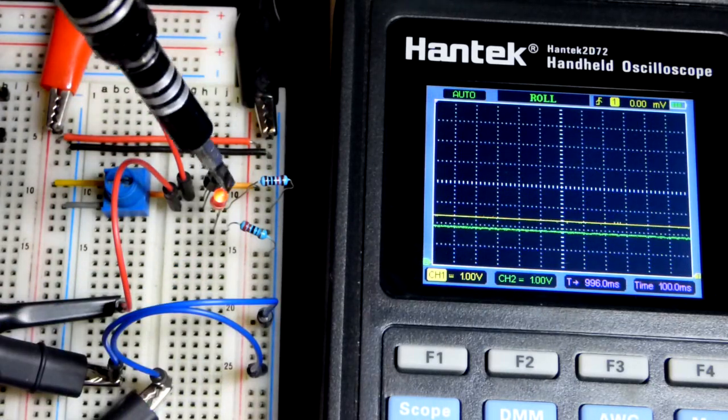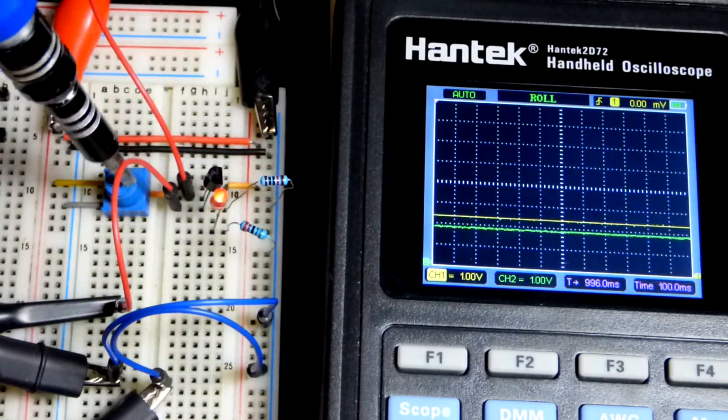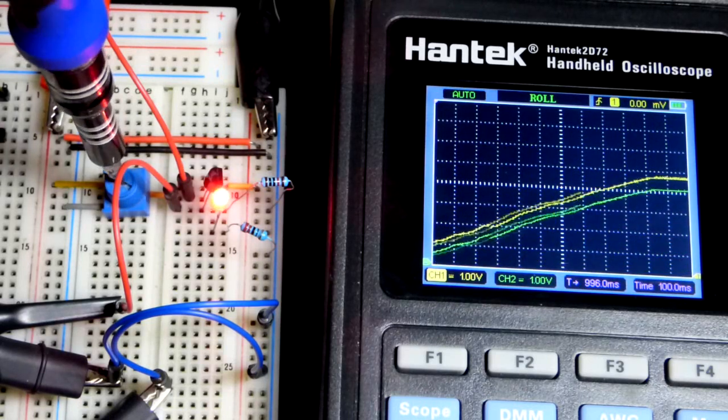So instead, the collector passes current as needed to maintain that 0.6 volt difference. The trim pot doesn't have to provide power. The transistor does.